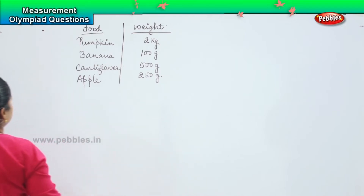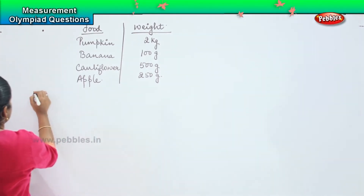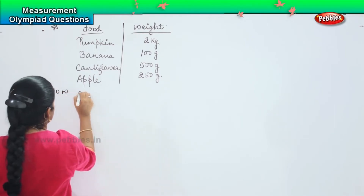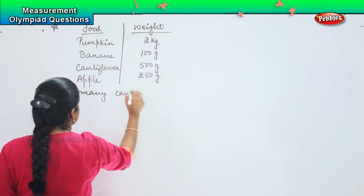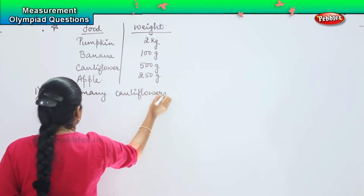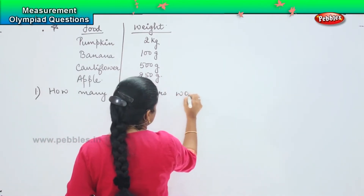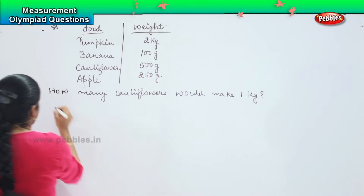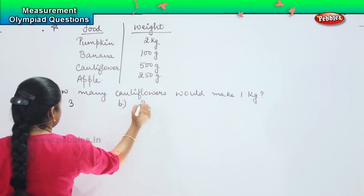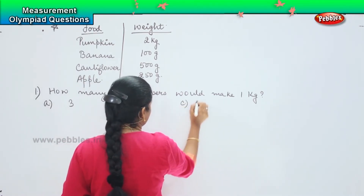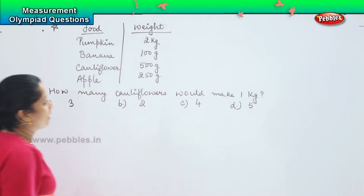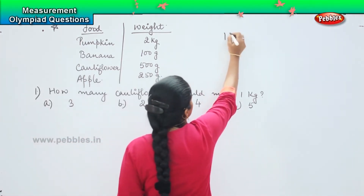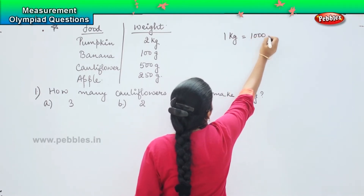Now the first question is: how many cauliflowers would make 1 kg? Your options are A: 3, B: 2, C: 4, and D: 5. How many cauliflowers would make 1 kg? We know that 1 kg is equal to 1000 grams.